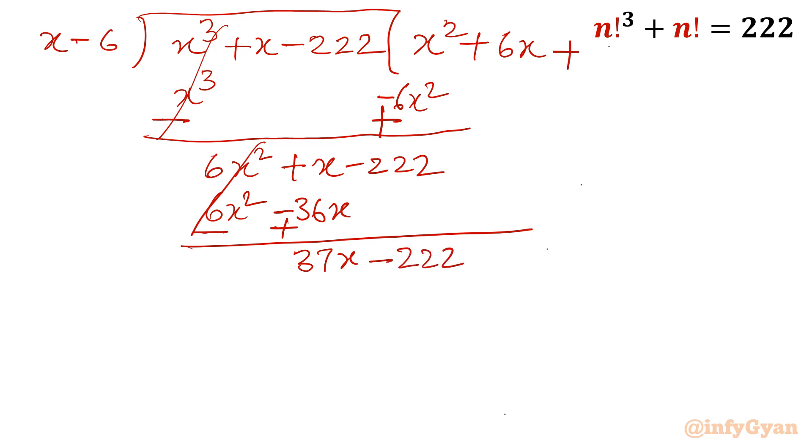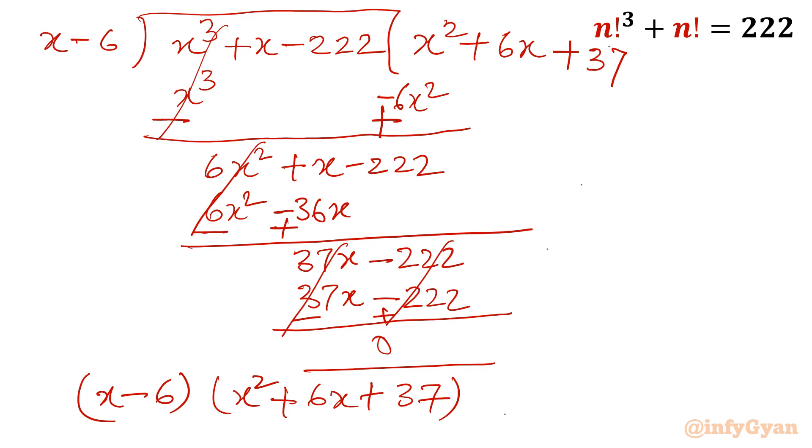Again, I will do the same job. Change of sign. This will get over 37x minus 222. Now, I will take obviously x is there, so I need to write here 37. This will become 37x minus 222. 6 times 37 is 222. Now, you can see once I will change its sign, this will get over 0. So using long division method also, we have calculated the two brackets as x square plus 6x plus 37.